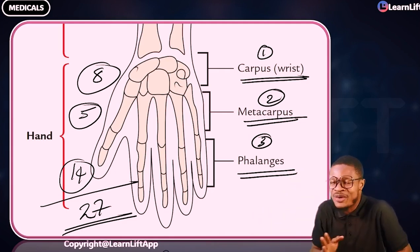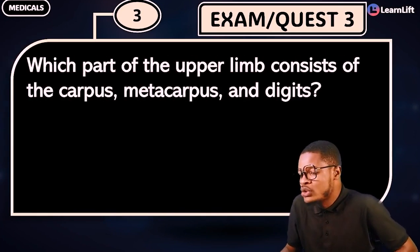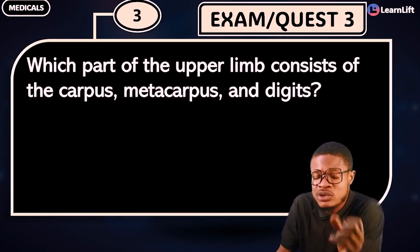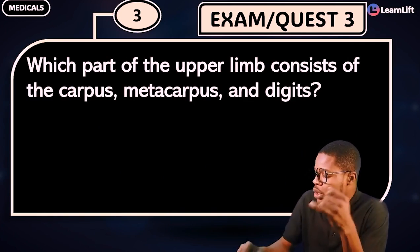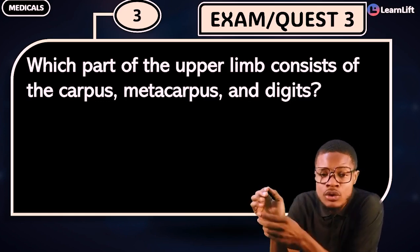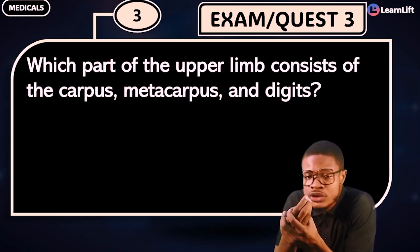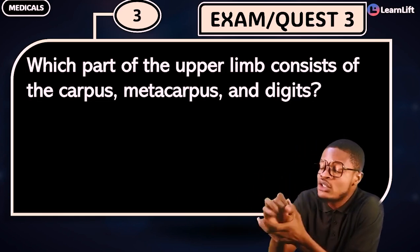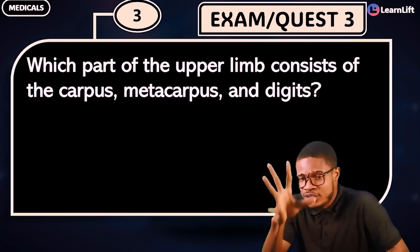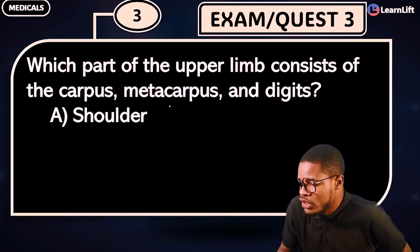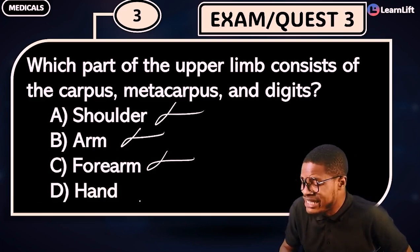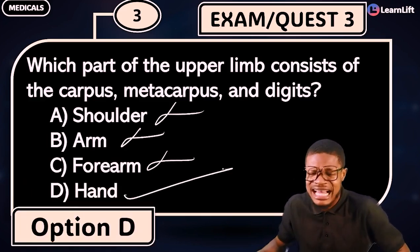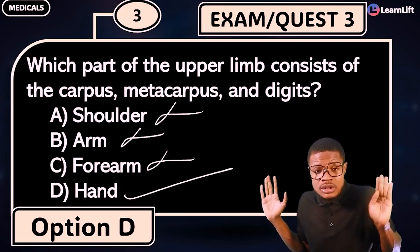Practice question: which part of the upper limb consists of the carpals, metacarpals, and digits? Option A: shoulder. Option B: arm. Option C: forearm. Option D: hand. The answer is Option D — the hand. Easy.